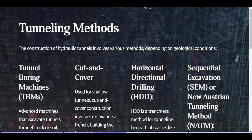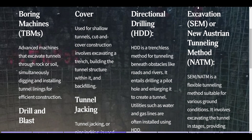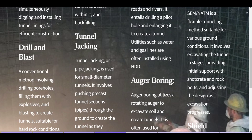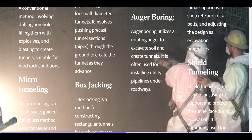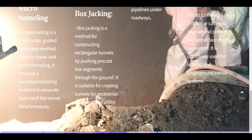Tunneling methods. The construction of hydraulic tunnels involves various methods depending on geological conditions. Tunnel Boring Machines are advanced machines that excavate tunnels through rock or soil, simultaneously digging and installing tunnel linings for efficient construction. Drill and Blast is a conventional method involving drilling boreholes, filling them with explosives, and blasting to create tunnels, suitable for hard rock conditions. Micro Tunneling is a small-scale, guided trenchless method using a micro-tunnel boring machine to excavate and install the tunnel simultaneously.